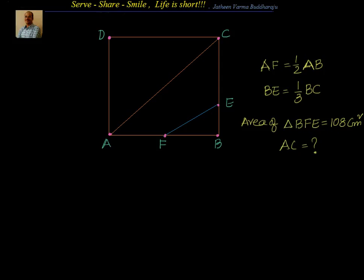So we have to find out what is AC. How to approach this problem? First and foremost, we have been given ABCD is a square, so let's try to start with saying that the side of the square be X. So I have all the sides equal to X.